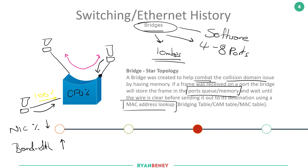As time moved on, you can see the progression: from a single cable everyone clamped onto where traffic was sent to everyone, to a star topology physically by introducing the hub, allowing everyone to connect back to a central device for easier management. Then the bridge took that physical star topology concept and made it a logical one too, by introducing the ability to learn traffic as it comes in and out of ports — helping prevent unwanted traffic being sent to individual hosts.